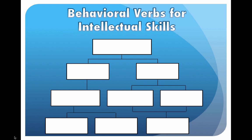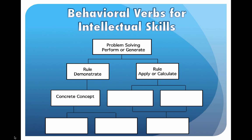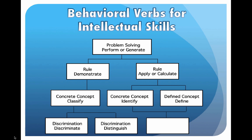When you look at a hierarchy, you use behavioral verbs for intellectual skills. They are standardized, though you'll choose your own depending on the subject matter. At the top we have problem-solving: perform, generate, create, explain. Next are rules: demonstrate, apply, or calculate. For concrete concepts: classify or identify. For defined concepts: define. Discriminations might use: discriminate, distinguish, or select. Remember, this level is rarely included in a hierarchy unless you're starting with beginning learners.